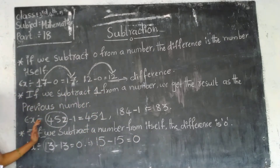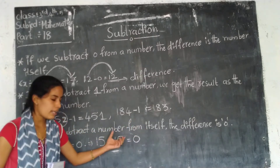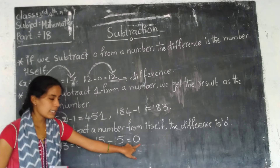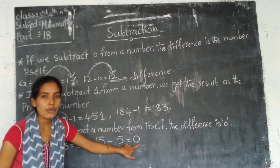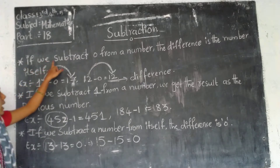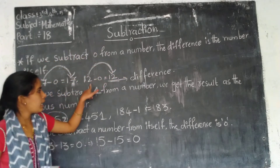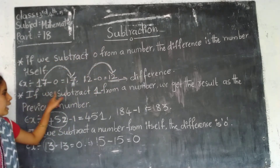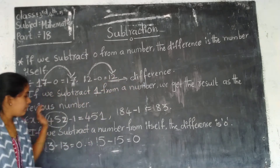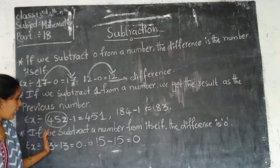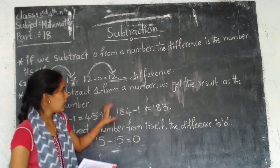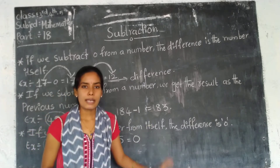If we subtract the number from itself, the total becomes 0. If we subtract one from a number we get the previous number. So if we subtract a number from itself, we get 0. These are the basic properties of subtraction.